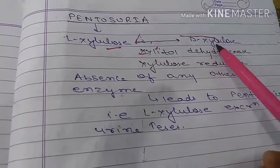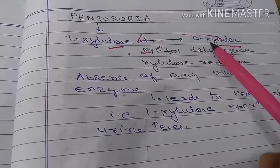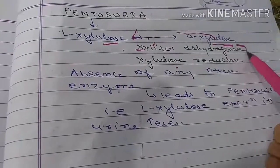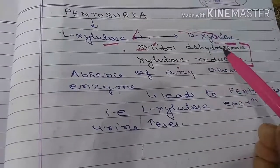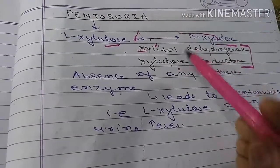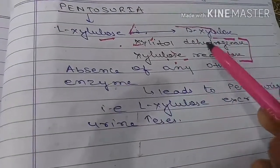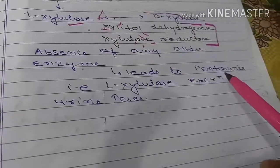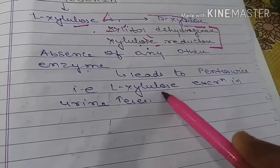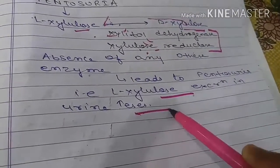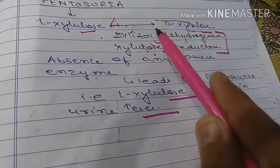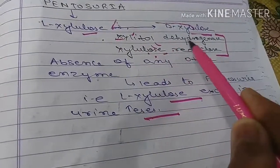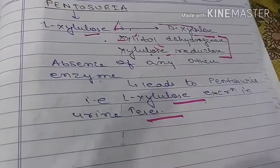Another clinical condition is Pentosuria. L-xylulose will accumulate and cannot be converted to xylitol. The two enzymes responsible are xylitol dehydrogenase and xylulose reductase — a defect in either of these two enzymes leads to Pentosuria, characterized by L-xylulose appearing in the urine.